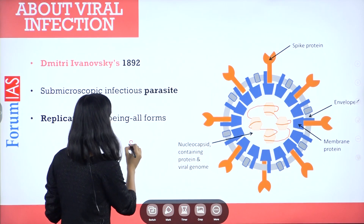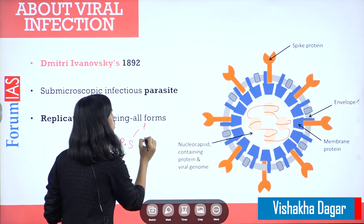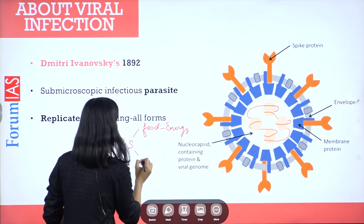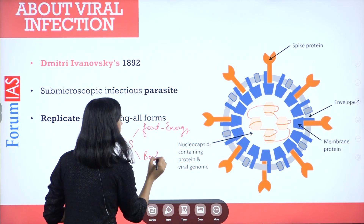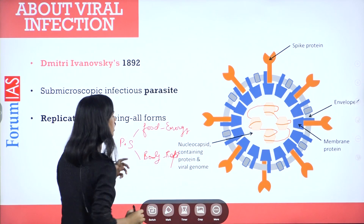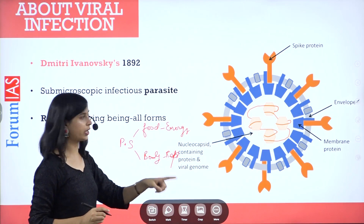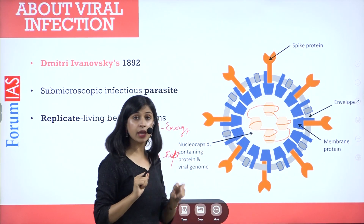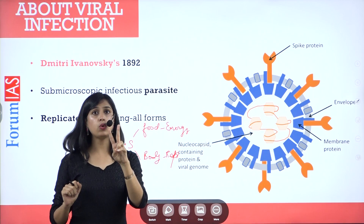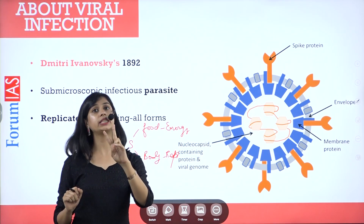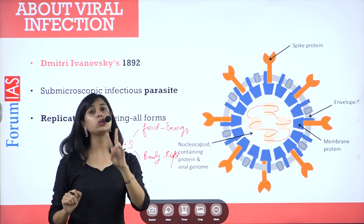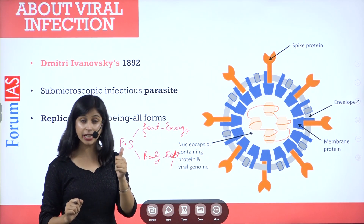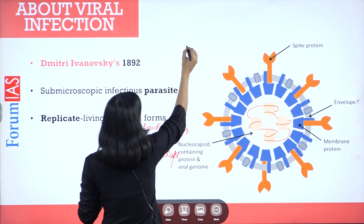A parasite needs food and energy to sustain itself and a mechanism to replicate. So a parasite is dependent on the host body. The virus's body has two things to remember: one is protein and the other is genetic material. These two things make up your virus. So there are two things in the virus: one is your genetic material and the other is your protein.